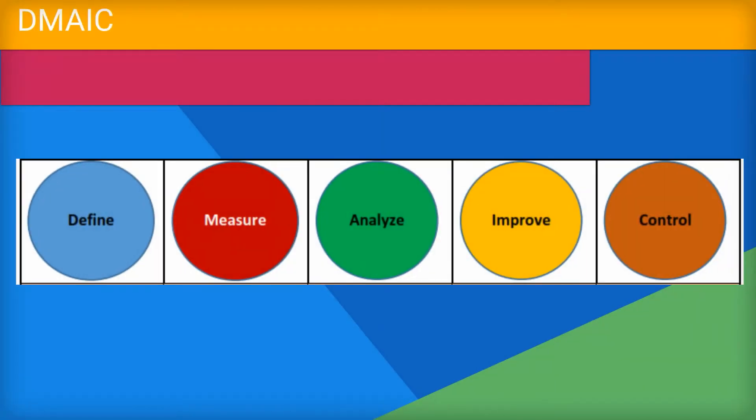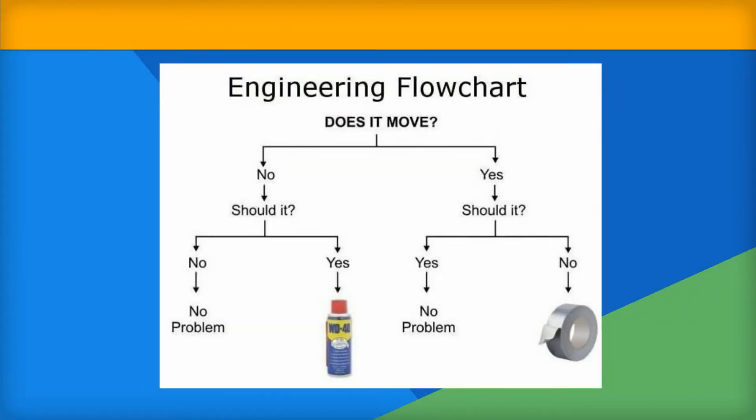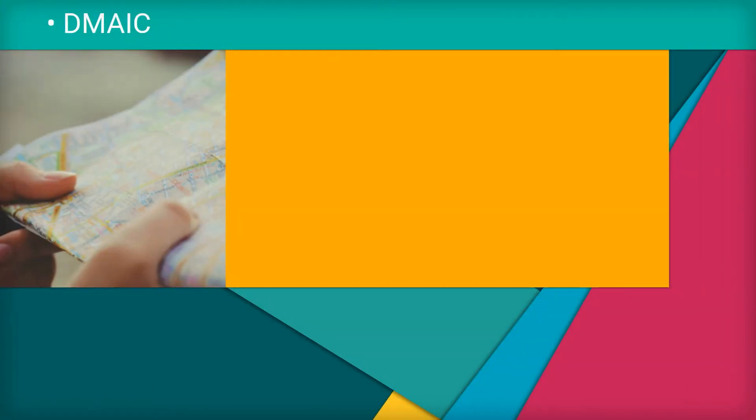DMAIC is a systematic method for organizing and managing measurable improvement. DMAIC is a cornerstone of most Six Sigma initiatives and is favored by many data-intensive design, engineering, manufacturing, and healthcare businesses.